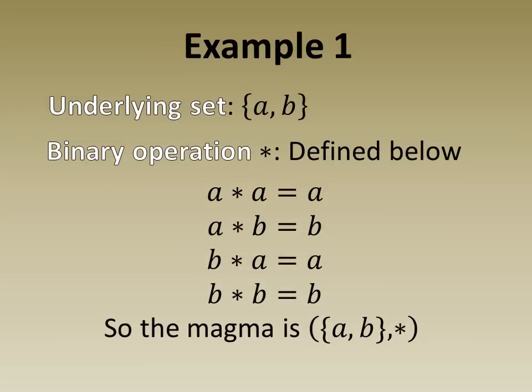In example 1 we have an underlying set comprised of the letters A and B and a binary operation symbolized by a star defined in full below. By inspection we see it is closed on the underlying set so we have a magma which we write symbolically like this.